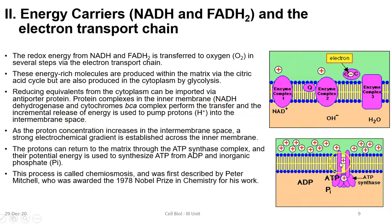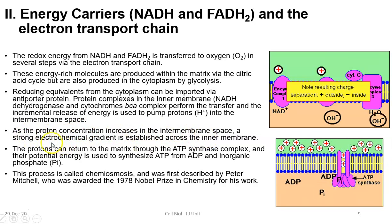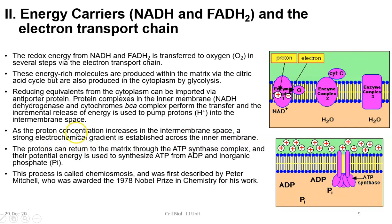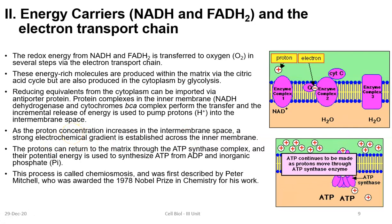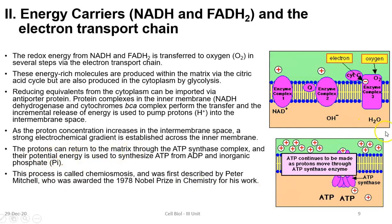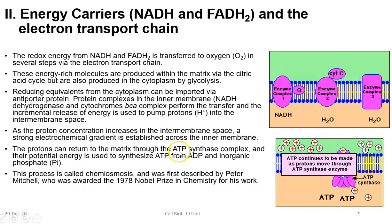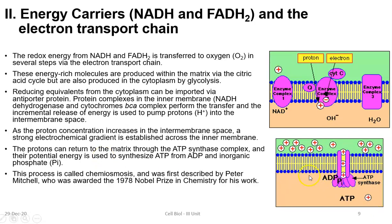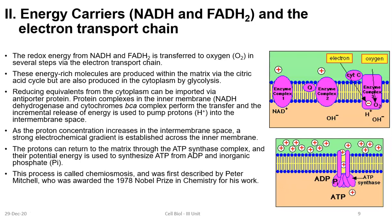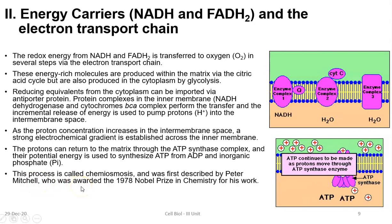Finally, proton pumping: as the proton concentration increases in the intermembrane space, a strong electrochemical gradient is established across the inner membrane. Protons can return to the matrix through the ATP synthase complex, and their potential energy is used for converting ADP into ATP — ADP joining with inorganic phosphate to form ATP, facilitated by ATP synthase. This process is called chemiosmosis, and it was first described by Peter Mitchell, for which he was awarded the Nobel Prize in 1978.